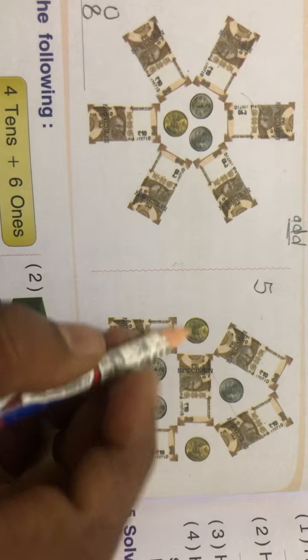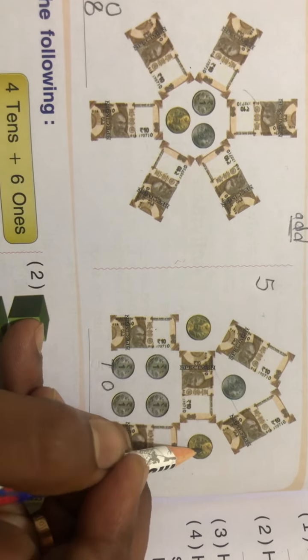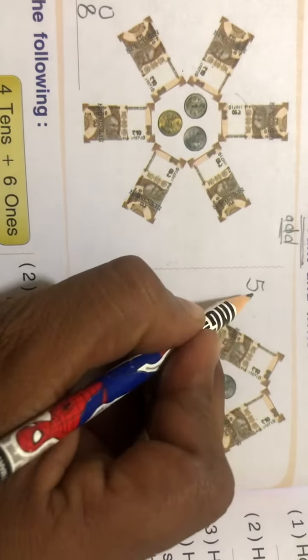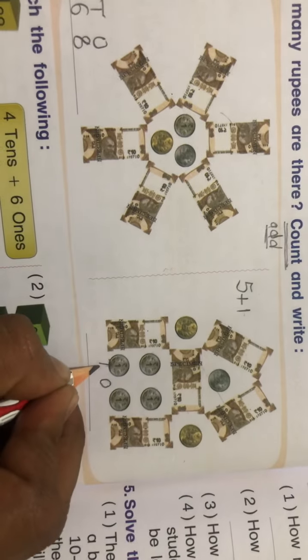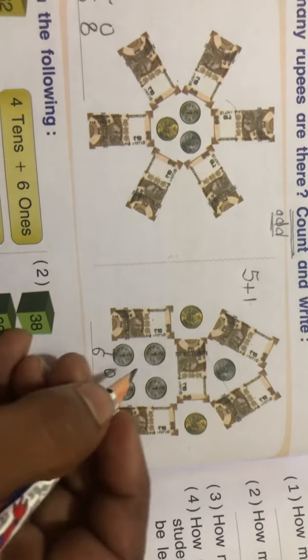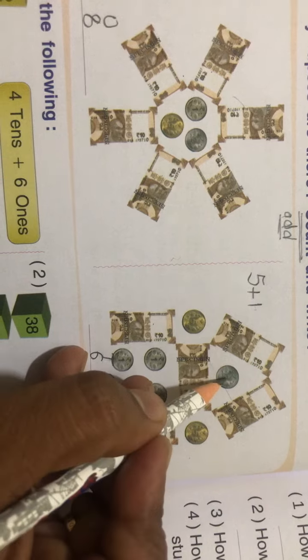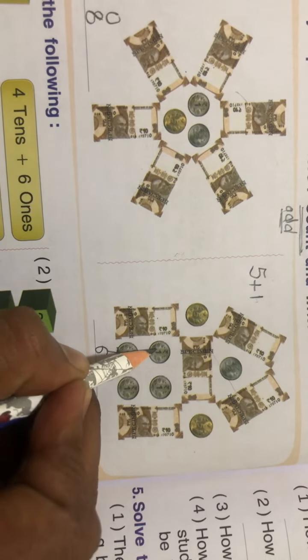Five rupees plus five rupees. The two five rupee coins add up to ten, so that's another ten. So in total we are having six tens. And how many ones are there? Two plus one, three plus one, four plus one, five plus one equals six.